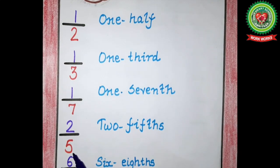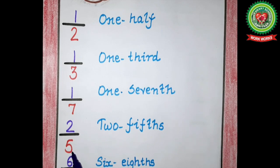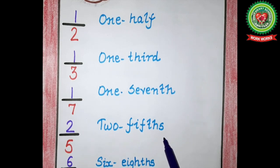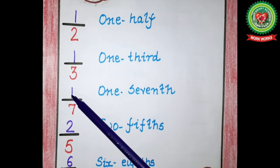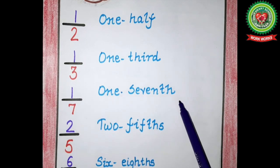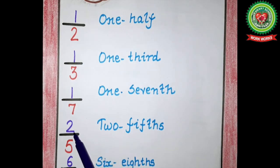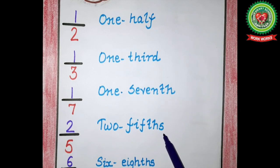Next example: two upon five. Write the numerator as it is — two — and for five write 'fifths' (F-I-F-T-H-S) — two fifths. Notice I have written 's' here but not in the previous example. This is because in the previous example there was one in the numerator. Whenever one is in the numerator we do not write 's'. If any other number — two, three, four, five, etc. — is in the numerator, we add 's' to the denominator word: two fifths.